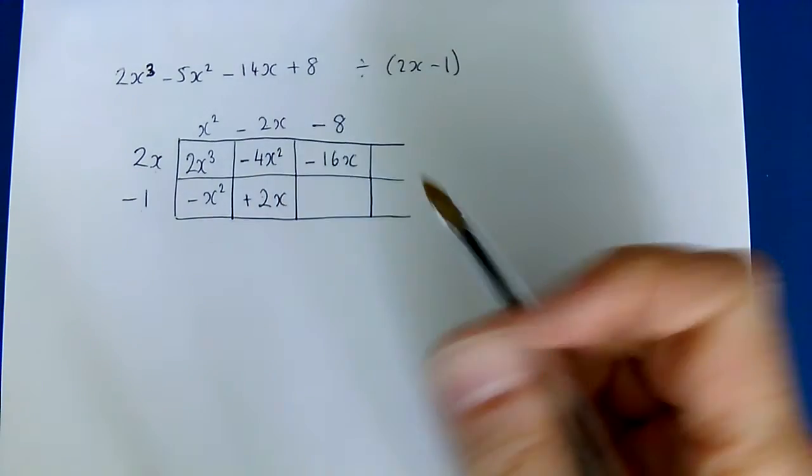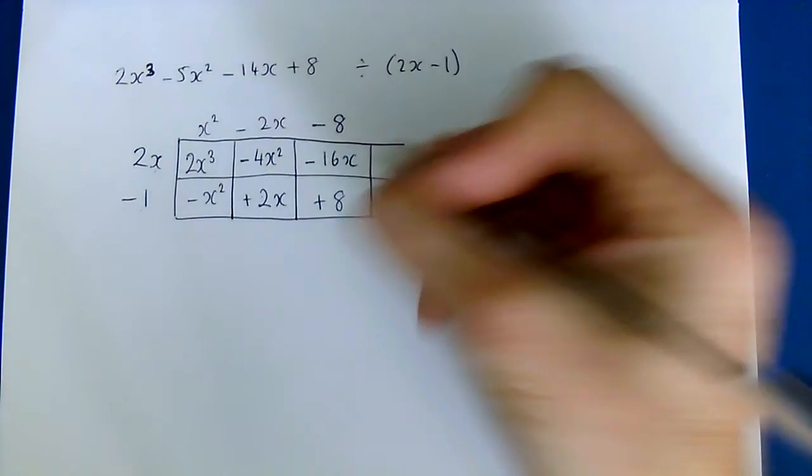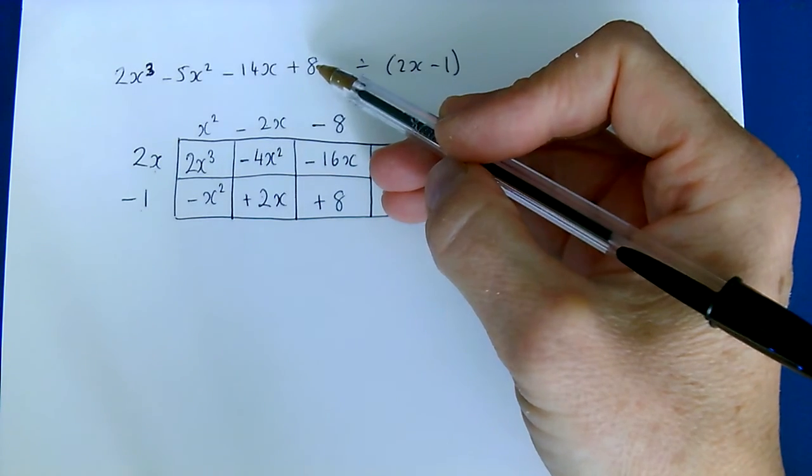We need negative 8 and finally negative 1 times negative 8 is plus 8 and we just check that matches our final term. Brilliant.